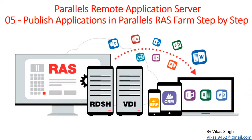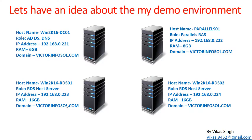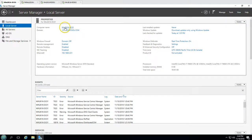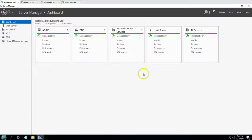Let's see what is in my demo environment. We have four virtual machines. The first virtual machine is win2k12dc01, which is my Active Directory and DNS server. You can see Active Directory and DNS services are running on this machine, and my domain name is victorinfosol.com. This is my domain controller.